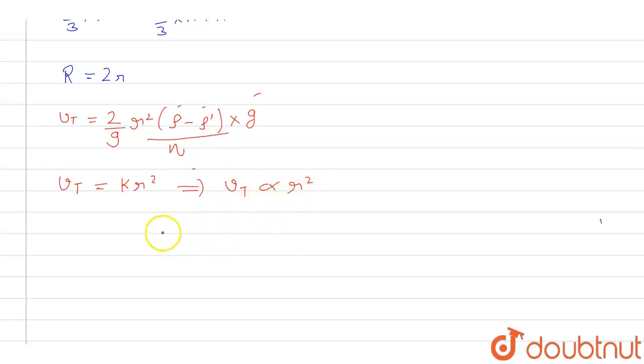Okay, so if we suppose that the terminal velocity of a small drop is v1 and the bigger drop is v2, we can say that v1 is given in the question, that is 8 centimeter per second.